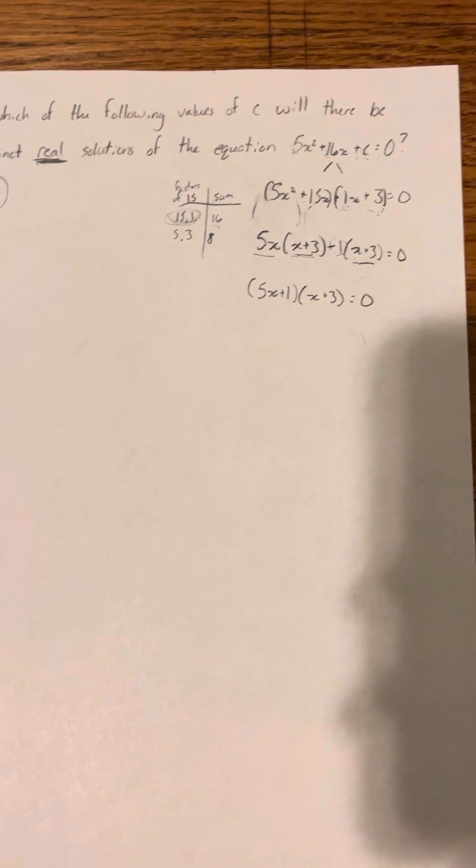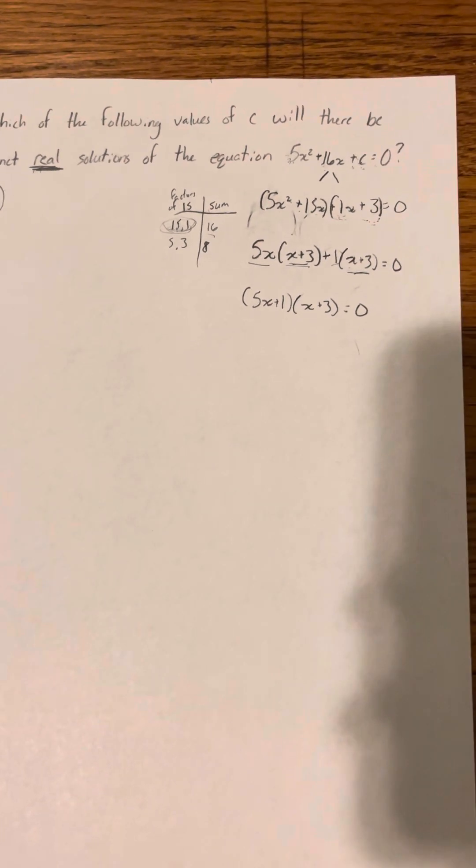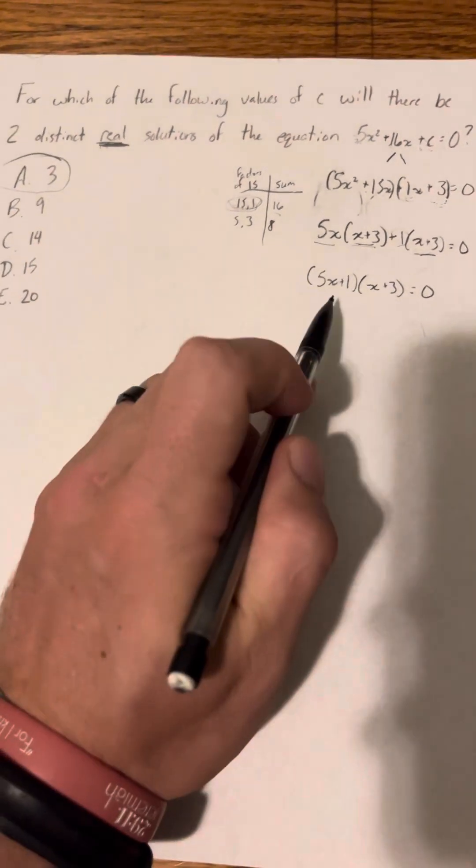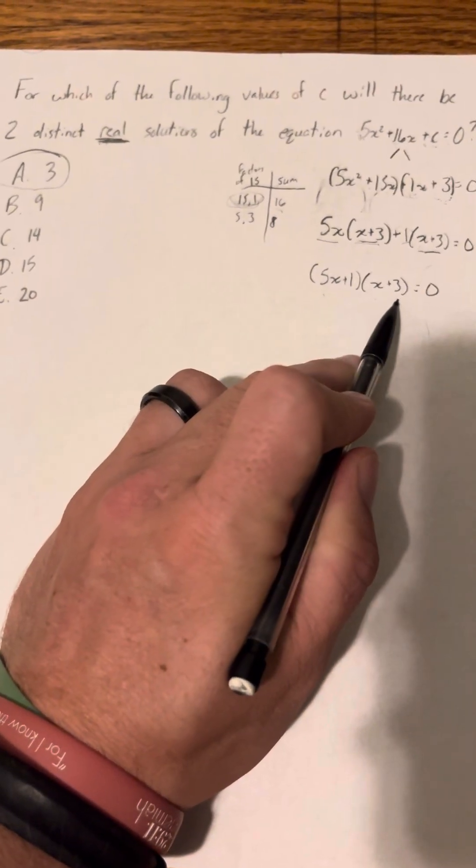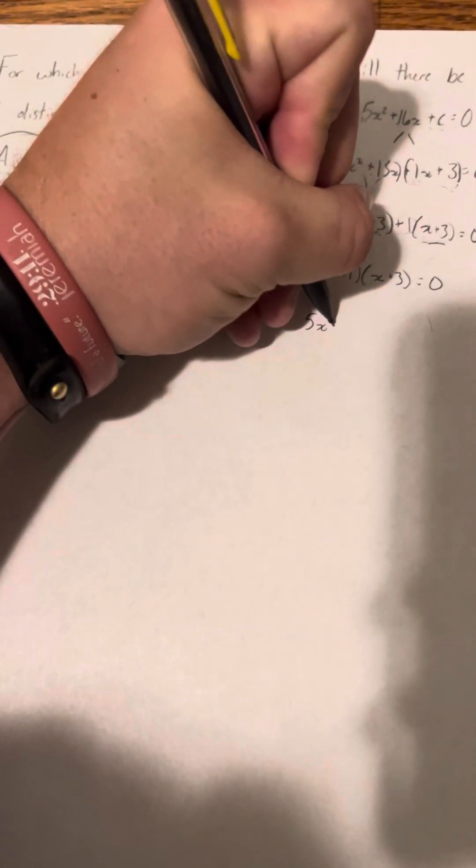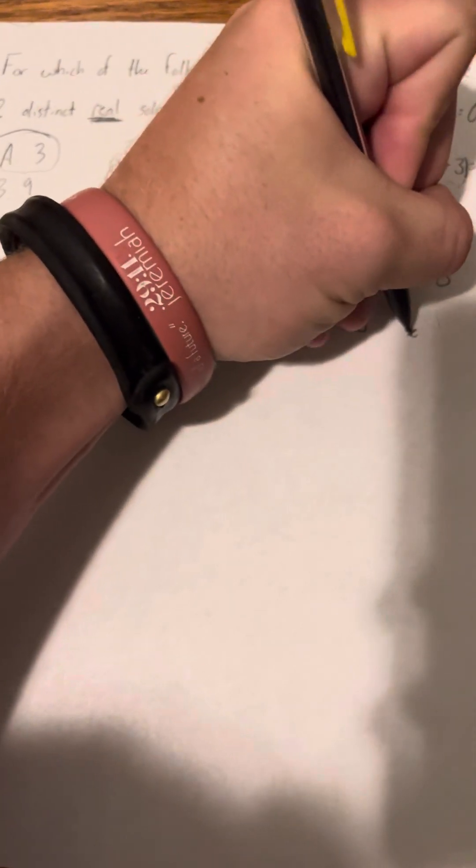Okay, so now once we're here, this is going to be like the last example we talked about where you now have two sets of parentheses equal to 0. So you have to just set each individual one equal to 0 and solve. So that will be 5x plus 1 equals 0, and x plus 3 equals 0.